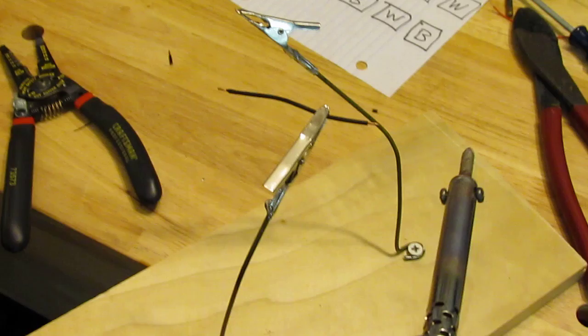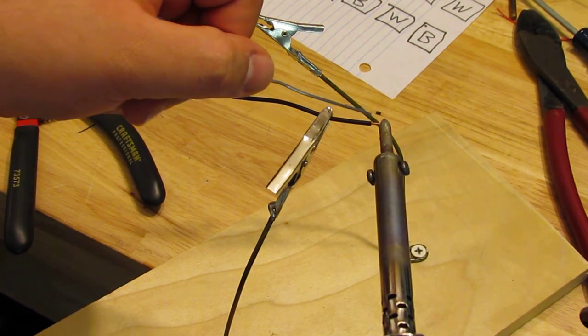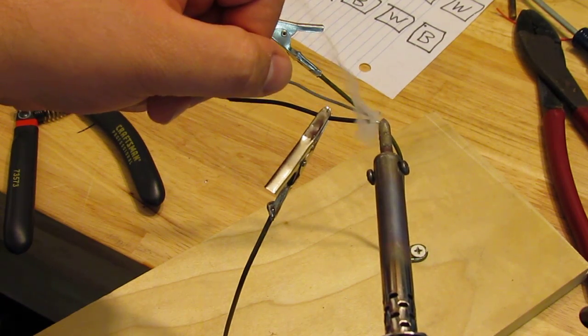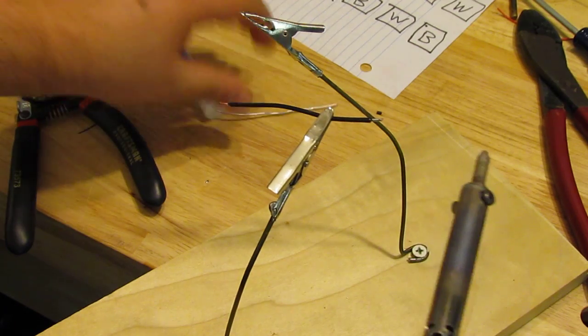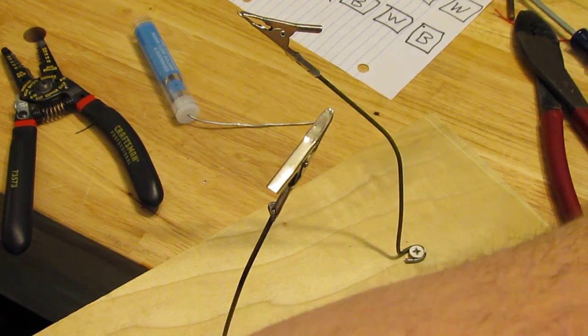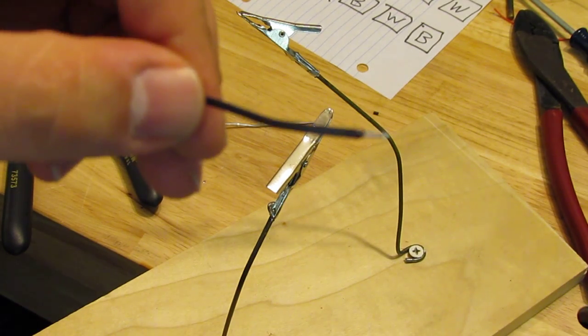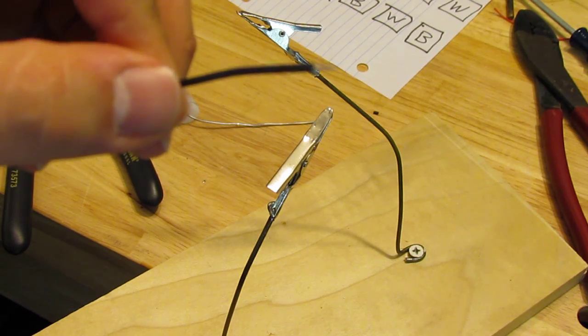So you just put your soldering iron onto the tip of the wire just a little bit, and then get your flux wire onto it. And then it should absorb it really quick. And then you have a tinned and stripped wire ready to go onto the LEDs.